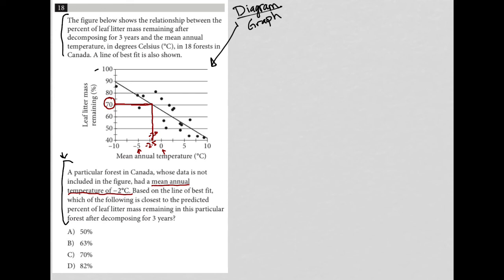So now look at my answer choices. Choice A says 50 percent, which is way down here. There's just no chance, it's not even close. Sixty three percent, which is kind of like here again, not even close.